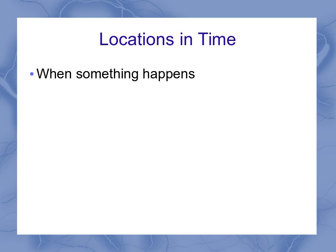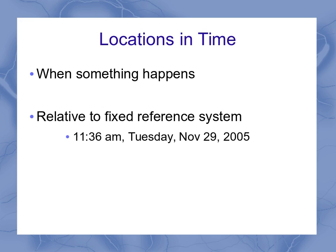For location and time, we're describing when something happens. So that's one of the types of measurements we can make about time. Now we can talk about this relative to a fixed reference system. And this is what we often refer to when we say, when did it happen? We want to know what time, what day, what year, et cetera.